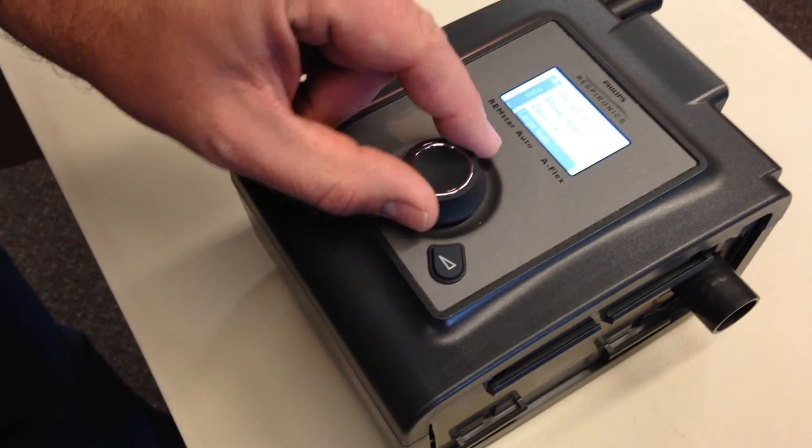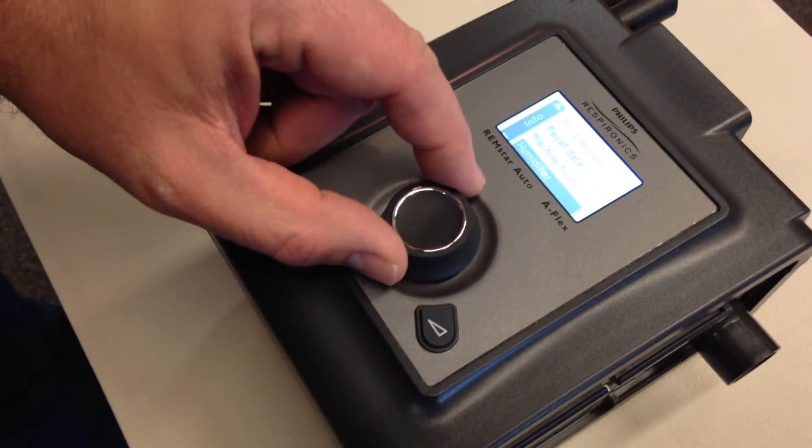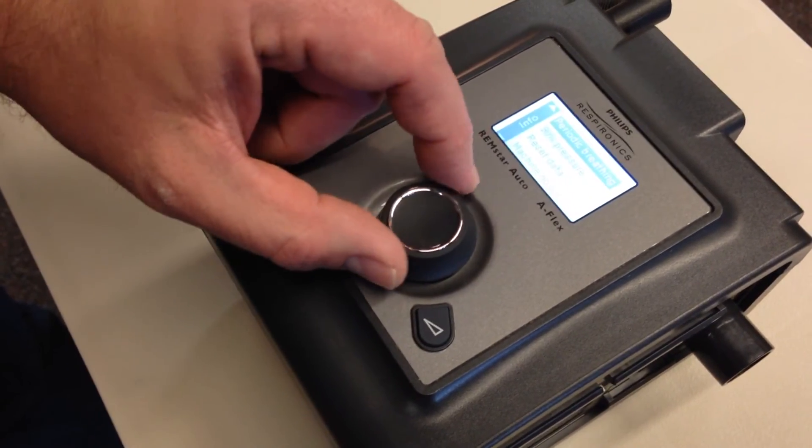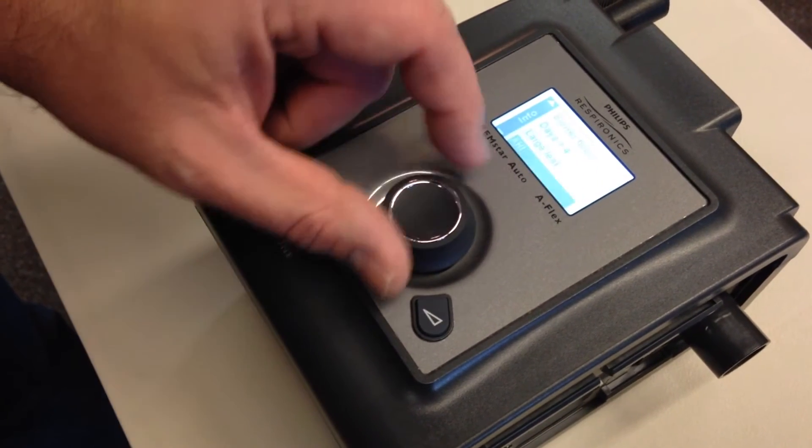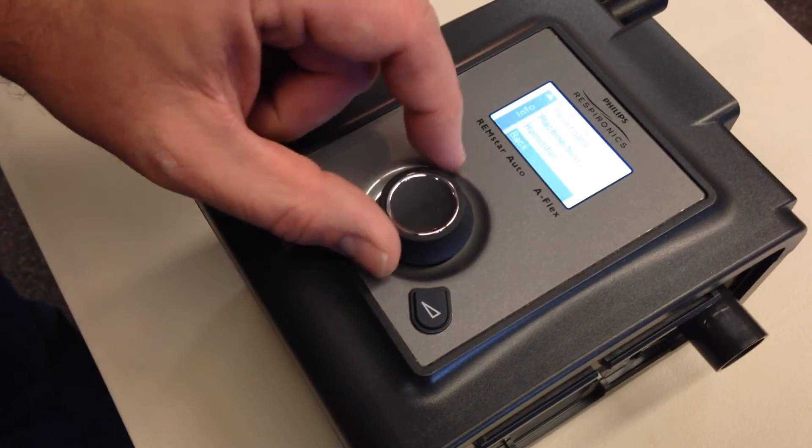Then you're going to need to scroll down to machine hours. Now again, it's not blower hours because those are also listed in this screen. You need to go to machine hours.